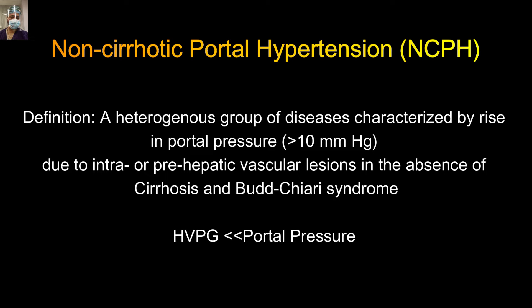The most common cause of obstruction is cirrhosis after alcoholic liver disease. When we talk about non-cirrhotic portal hypertension (NCPH), we are talking about two terms: non-cirrhotic portal hypertension and non-cirrhotic portal fibrosis — they are not synonymous. NCPH is when there is a rise in portal pressure in the absence of cirrhosis — a heterogeneous group of diseases characterized by a rise in portal pressure more than 10 mmHg due to intra- or pre-hepatic vascular obstruction in the absence of cirrhosis and Budd-Chiari syndrome.